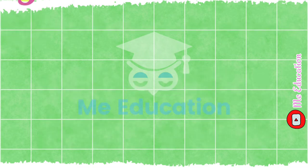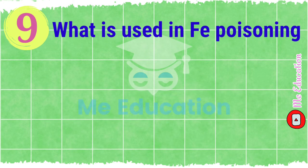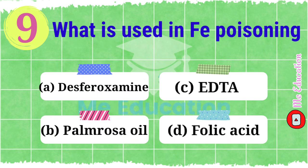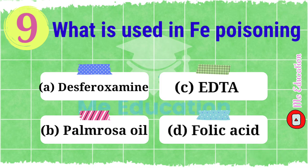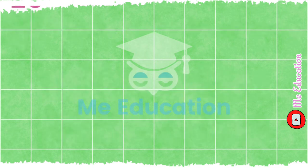Question number nine: what is used in iron poisoning? Options: A) desferrioxamine, B) palmarosa oil, C) EDTA, D) folic acid. Pause the video and try to solve this. The right answer is option A, desferrioxamine.